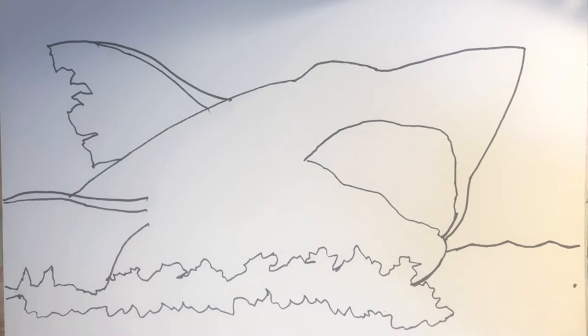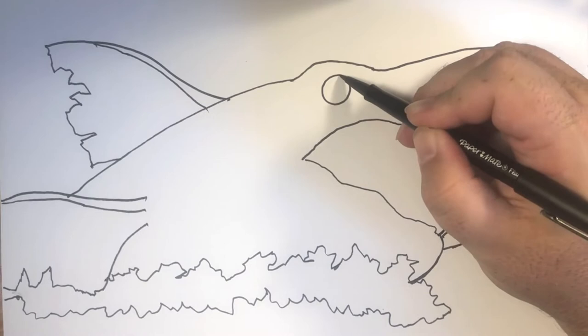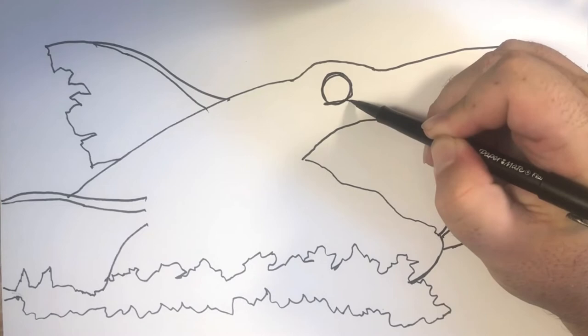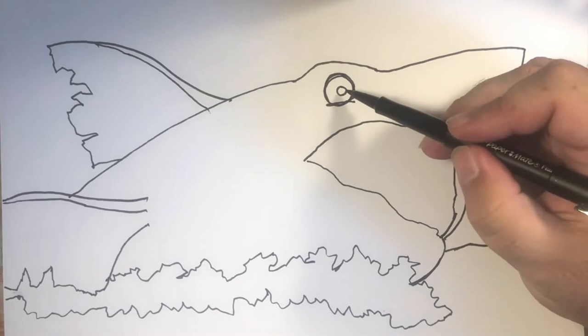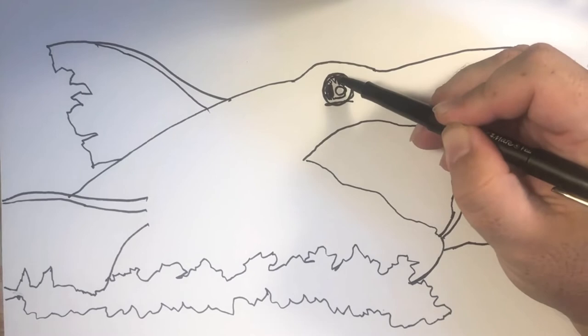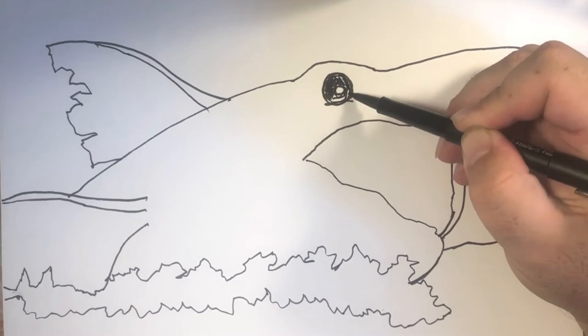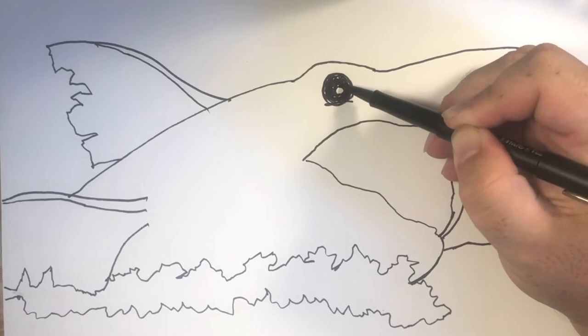So then we need to make our eye. I'm going to draw a circle right here and flatten it just a little bit. Then I'm going to put a little circle here. I'm going to leave that circle white because we're going to come back and make the center of it red. So I'm just going to color around that really quick.